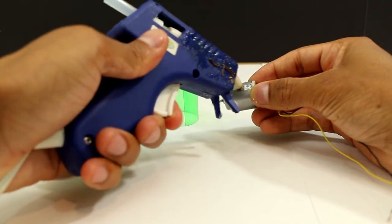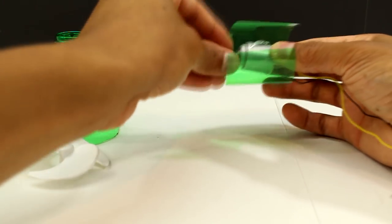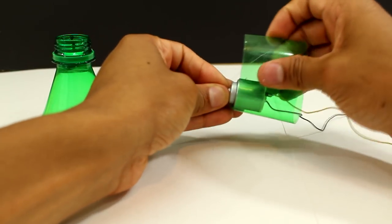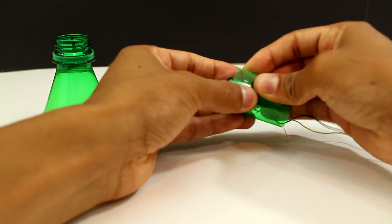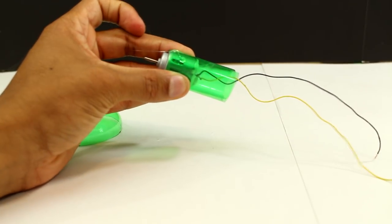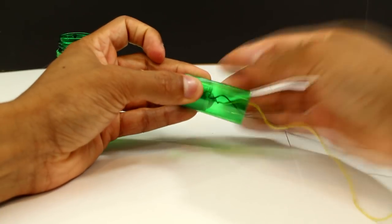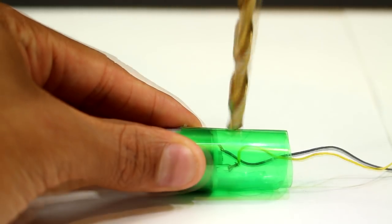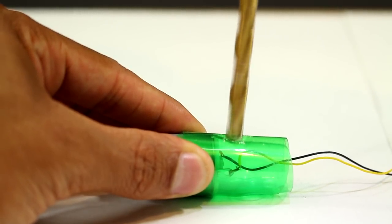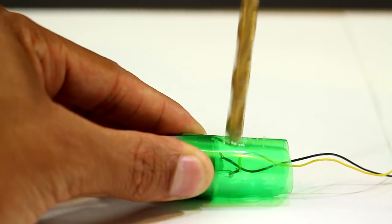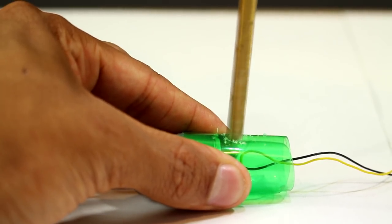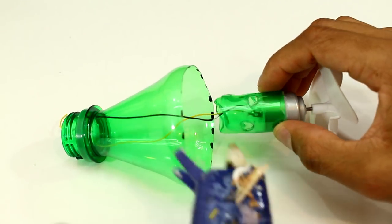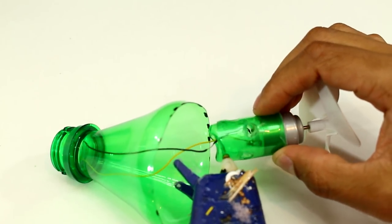Now we're going to go ahead and put these two parts together. I'm going to drill one hole in this piece of plastic here, and then after that I'm going to drill three more. Once I have all four holes drilled, I'm going to put glue around it and place it into the front of the water bottle.